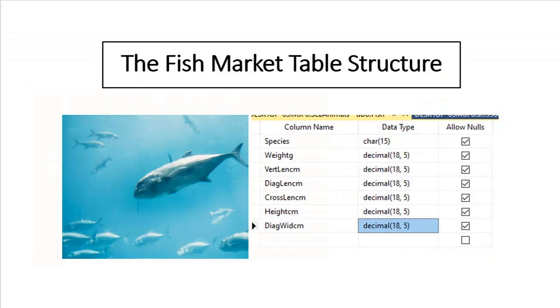So here is the table structure for the fish table in SQL. The first thing we have is species, and it's char 15. We have the weight in grams, and all the rest of these are decimal 18.5. We have vertical length in centimeters, diagonal length in centimeters, cross length in centimeters, height in centimeters, and diagonal width in centimeters.